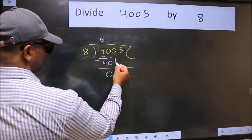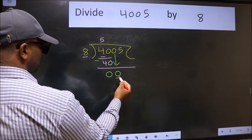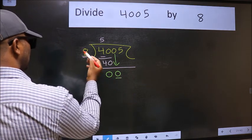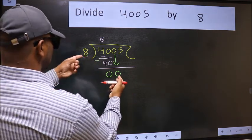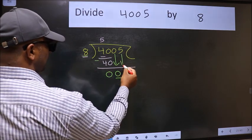After this, bring down the beside number. So 0 down. Now here we have 0 and here 8. 0 is smaller than 8. So we should bring down the second number.